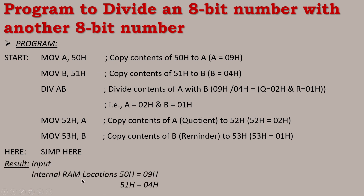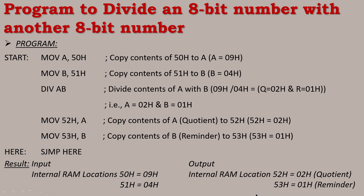To see the result: input internal RAM location 50H equals 09H hexadecimal (the dividend), and 51H equals 04H hexadecimal (the divisor). Output: internal RAM location 52H equals 02H hexadecimal — that is the quotient. And 53H equals 01H hexadecimal — that is the remainder.